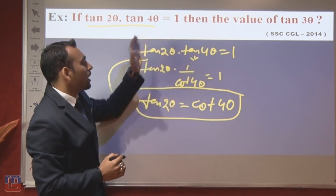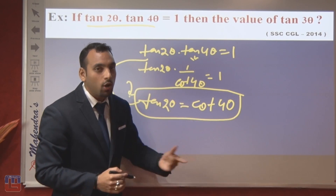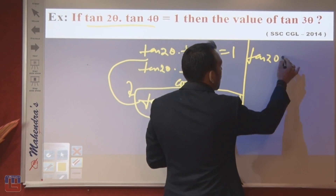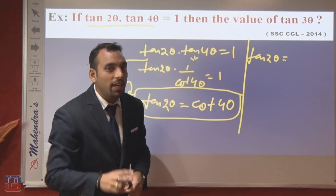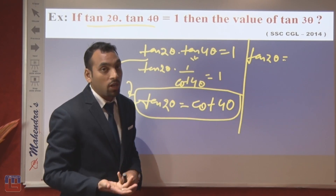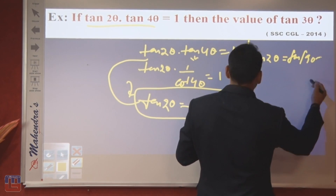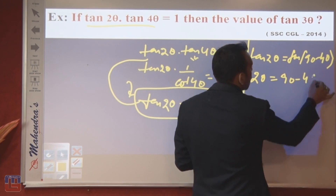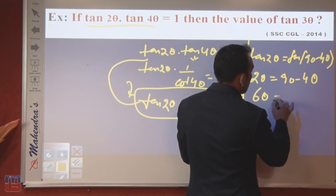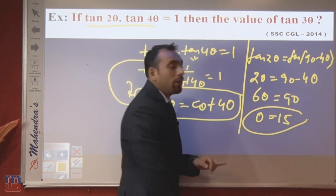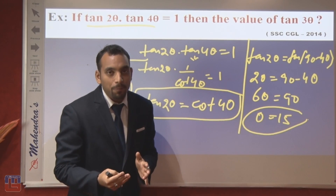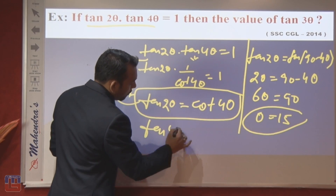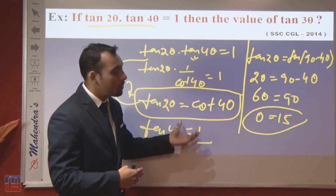We rewrite cot 4θ as tan(90° − 4θ), so tan 2θ = tan(90° − 4θ). Comparing: 2θ = 90° − 4θ, giving 6θ = 90°, therefore θ = 15°. Now, tan 3θ = tan(3 × 15°) = tan 45° = 1. This is an important question that has appeared in examinations.